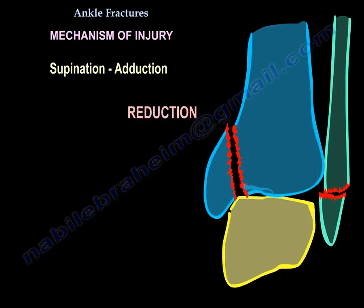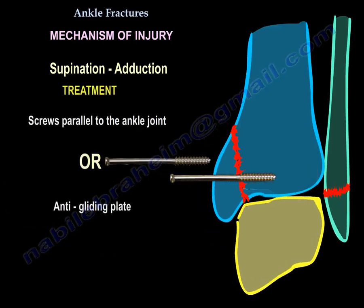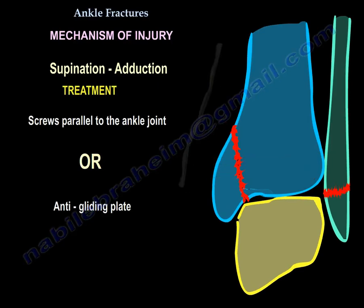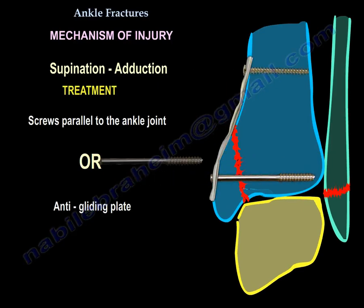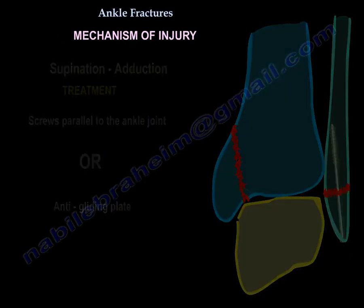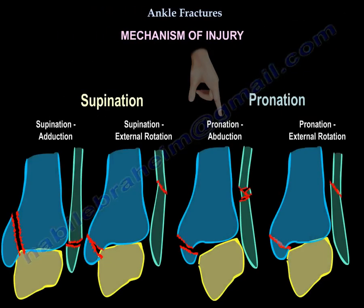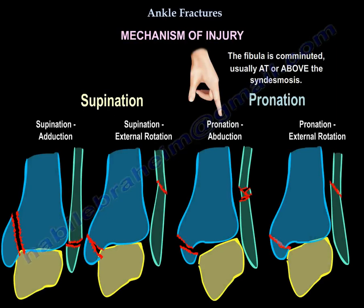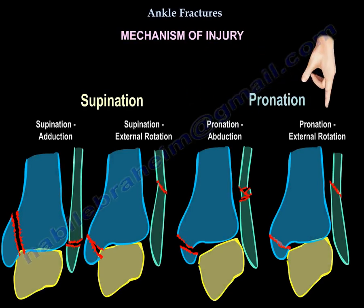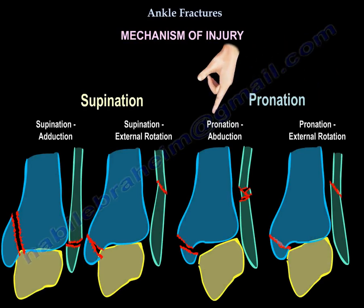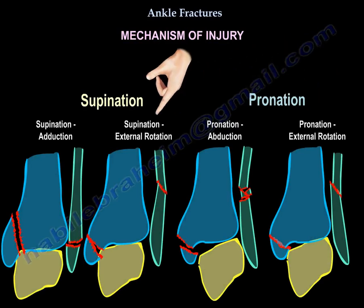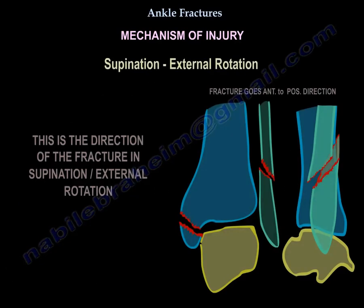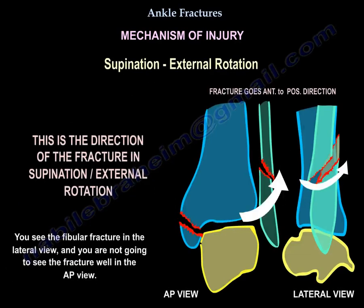You can fix this with screws parallel to the joint or an anti-glide plate. There is also a pronation-abduction fracture where the fibula is comminuted, usually at or above the syndesmosis. You will also have external rotation injuries: pronation external rotation or supination external rotation. In supination external rotation, this is the direction of the fibular fracture.